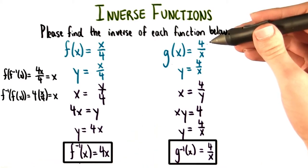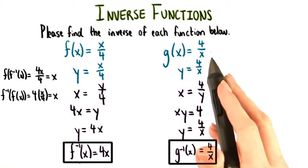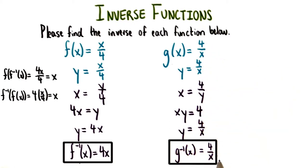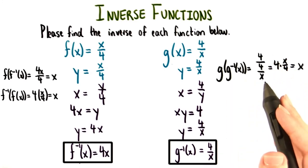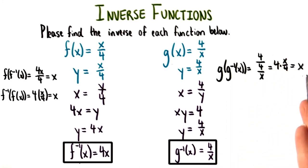Looking at g(x), we started off with g of x equals 4 over x. And interestingly enough, g inverse of x also equals 4 over x. Let's double check to make sure this works. g of g inverse of x is 4 over 4 over x, which simplifies to x.